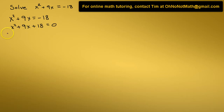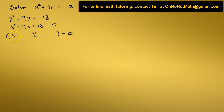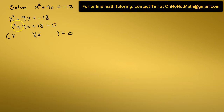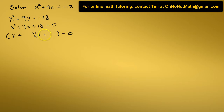Now we factor this trinomial. It will factor into the product of two binomials. The first terms of the binomials will be x, since x times x equals x squared. For the constant terms in the binomials, we need to know the signs. We look at the signs of the terms in the trinomial expression. This is a positive, which tells us that the signs of the constants in the binomials are both going to be the same. And since this is positive, they're both going to be positive.